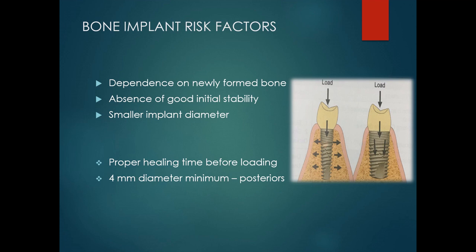Finally, smaller implant diameter — especially in the posterior regions — smaller diameter implants tend to fracture more compared to wider diameter implants. While placing an implant in the posterior region, at least a 4 mm diameter is needed, which will increase the surface area and enhance osseointegration.